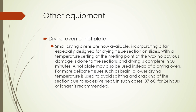Next, we have the drying oven or hot plate. Small drying ovens incorporating a fan are specially designed for drying tissue sections on glass slides. With the temperature set at the melting point of the wax, no obvious damage is done to sections and drying is complete in 30 minutes. For the flotation bath it's 10°C below the melting point, but for the drying oven or hot plate it is set at the melting point of the wax. A hot plate may also be used instead. For more delicate tissues such as brain, a lower drying temperature must be used to avoid splitting — 37 degrees Celsius for 24 hours or longer is recommended, because brain tissue is very delicate.